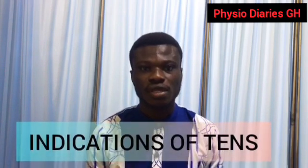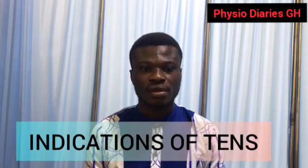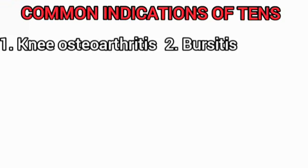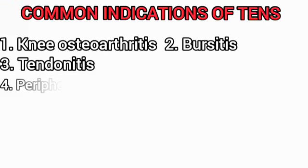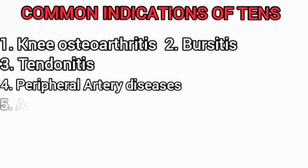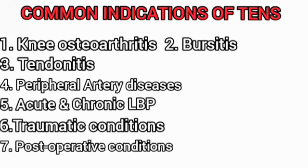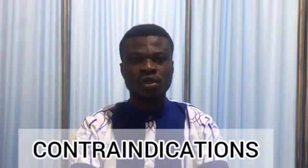Indications are conditions that require the use of the TENS machine. There are numerous conditions, but here are seven common ones: first, knee osteoarthritis; second, bursitis; third, tendinitis; fourth, peripheral artery disease; fifth, low back pain; sixth, traumatic conditions; and seventh, postoperative conditions.